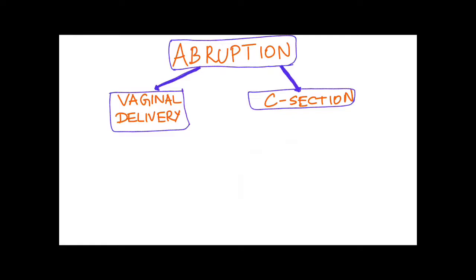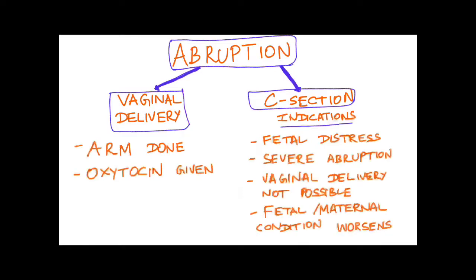Termination of pregnancy can be done by vaginal delivery in most cases. If the membranes are not ruptured, artificial rupture of membranes can be performed, and oxytocin is given to enhance uterine contraction and prevent postpartum hemorrhage. Cesarean section is indicated in cases of severe fetal distress, severe abruption, cephalopelvic disproportion, contracted pelvis, or worsening fetal or maternal condition.